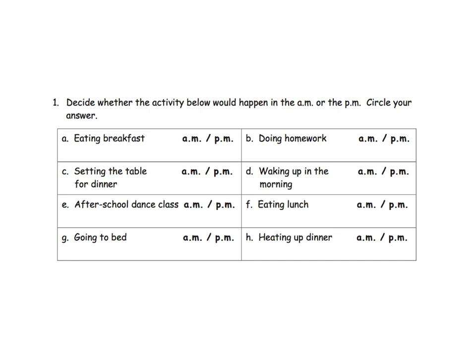Decide whether the activity would happen in the AM or PM. Eating breakfast — is that AM or PM? Well, it's likely to be AM, although with McDonald's now offering breakfast all day, you can engage in a nice little conversation with your students. Setting the table for dinner is another example — at Thanksgiving, some kids might be asked to set the table in the morning because dinner is at two or three. The idea is to let your students talk about AM and PM based on these activities.